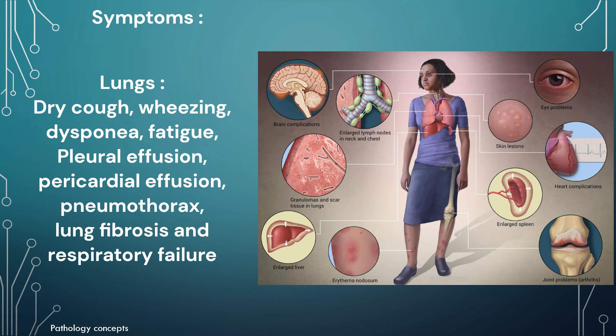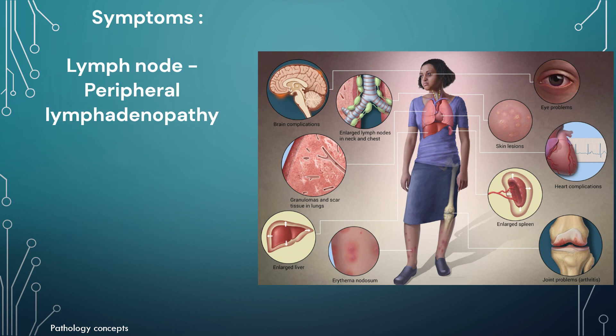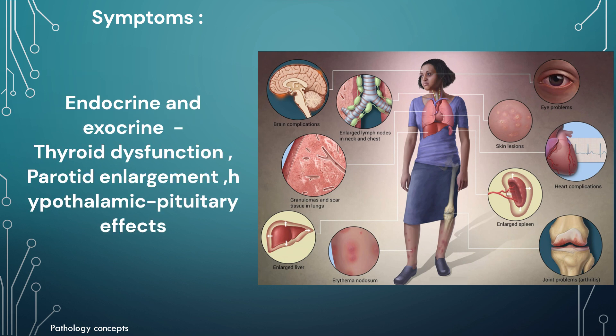Now let's see system-wise symptoms. In lung involvement: dry cough, wheezing, dyspnea, and fatigue. In acute conditions, pleural effusion, pericardial effusion, and pneumothorax may occur. In chronic conditions, lung fibrosis and respiratory failure can develop. When lymph nodes are involved, symptoms include peripheral lymphadenopathy; affected lymph nodes are moderately swollen and usually not painful.